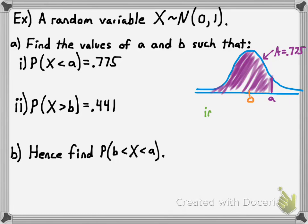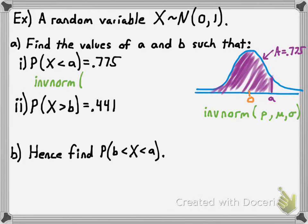Here's how the inverse normal works. The command tells you the value of a number that is greater than a specified percentage of the values in a normal distribution, given the mean and the standard deviation. When using the inverse normal command, you have to put the probability p that a number is less than a given value. The parameters you enter are: probability, then the mean, then the standard deviation. In our case, we're going to use inverse norm of 0.775, comma 0, comma 1. Type that into your calculator to find the value of a.